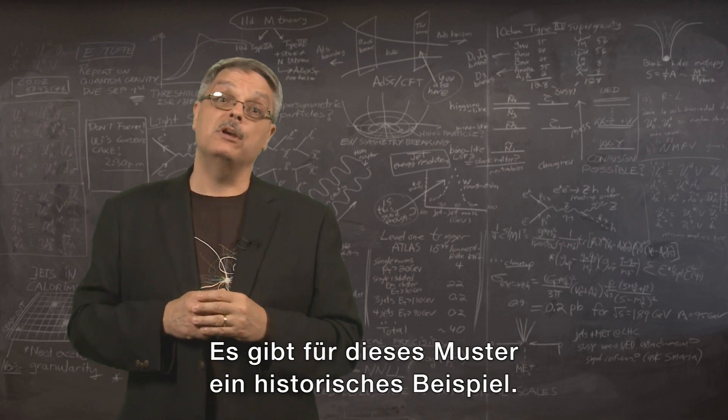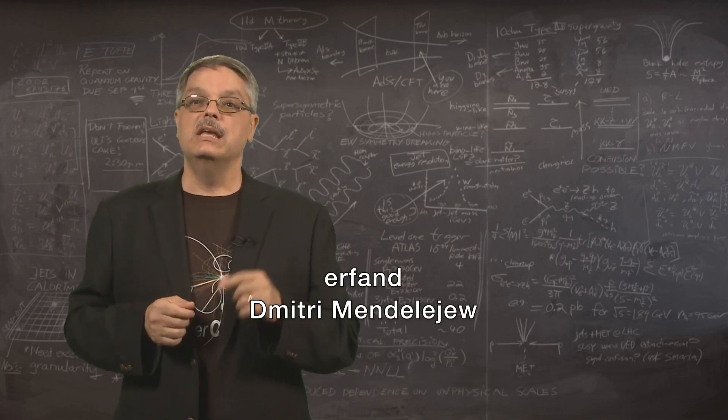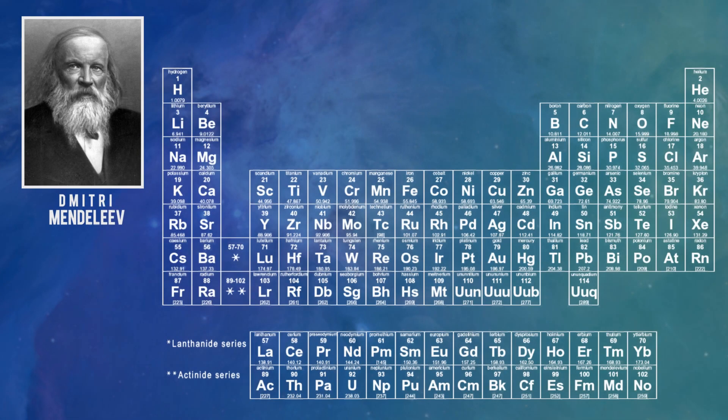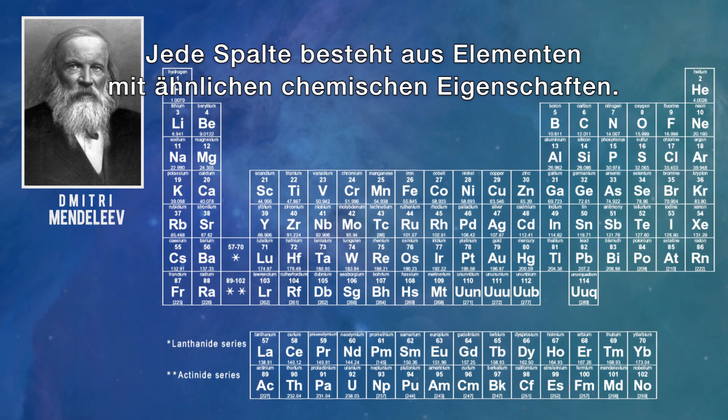There is a historical precedent for this pattern. In the 1860s, Dmitry Mendeleev invented the periodic table of chemical elements. You may remember from chemistry class. Each column consists of elements with similar chemical properties.